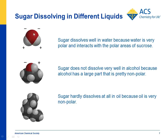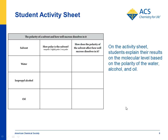That makes sense when you look at the polarities involved, because water is most polar. Alcohol has a little bit of polarity and was able to pull off some of the coloring. But oil is almost completely nonpolar and wasn't able to dissolve either the coloring or the sugar. On the student activity sheet, students look at which liquid is most polar — water, then isopropyl alcohol, then oil — and how it affects their ability to dissolve the sugar.